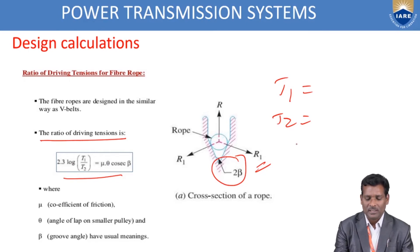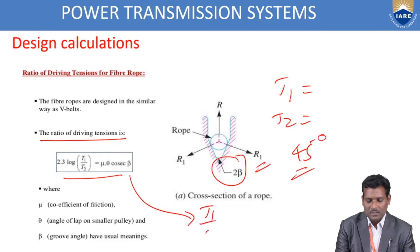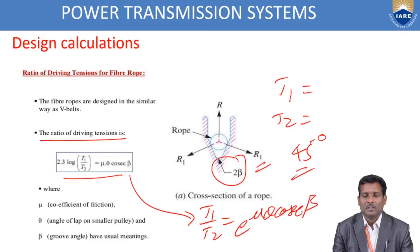Generally, the groove angle is 45 degrees. You can write this formula like this also: T1/T2 equals e^(μ·θ·cosecant(β)). This is antilogarithm with base 10. β is the half groove angle, so that is 22.5 degrees.